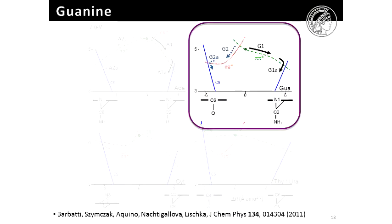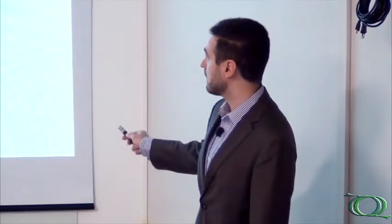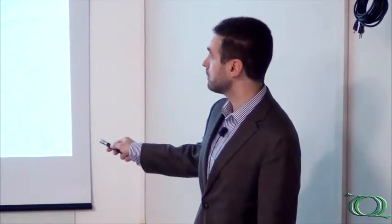That was for adenine, and we have similar simulations, not only for adenine, but for the other nucleobases as well. I just want to quickly show you that in the case of guanine, it also goes through a C2 conical intersection like this. And in a few cases, it accesses a C6 conical intersection with oxygen out of plane like this.